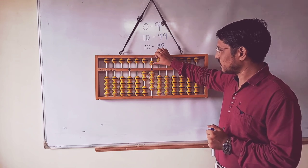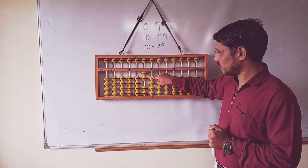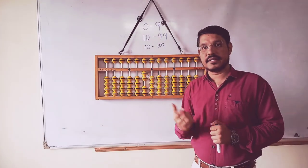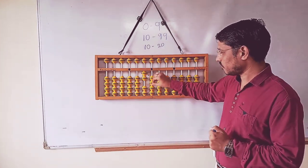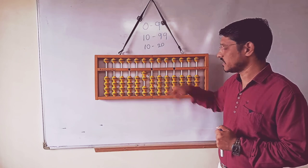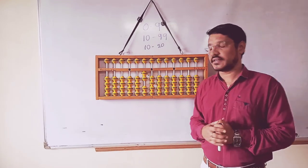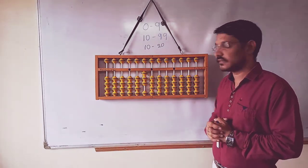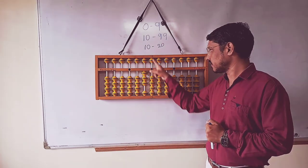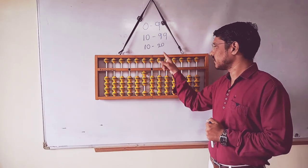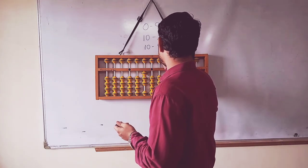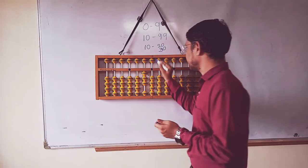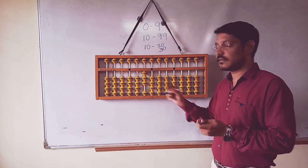If you want to become perfect in Abacus, you must do again and again practice in the same row. Next one is, I have already 29. We are going to put the next one, that is 30. 3, here is 0. This is the value of 30.